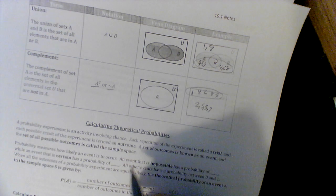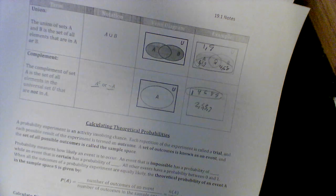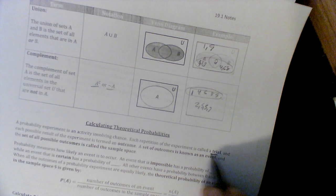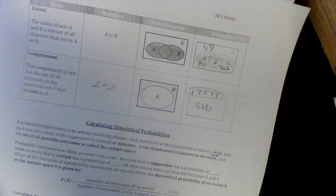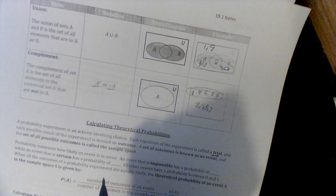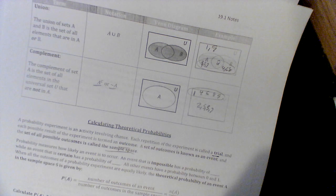Alright, now we're going to turn this into probability. Probability is an event involving chance. Each repetition of an experience is called a trial, and each possible result is called an outcome. A set of outcomes is known as an event, and the set of all possible outcomes is a sample space.